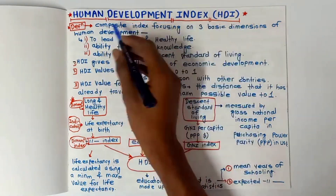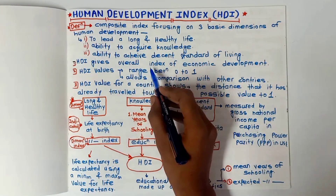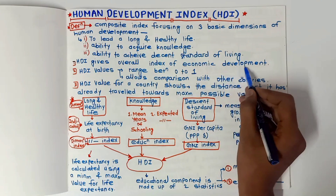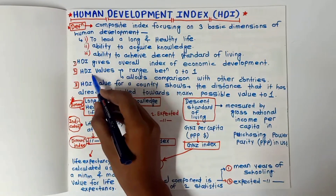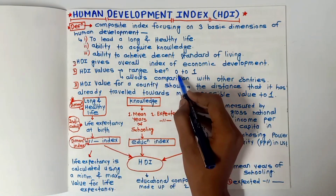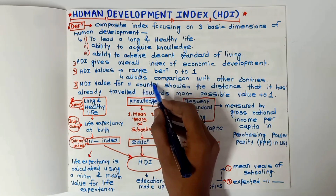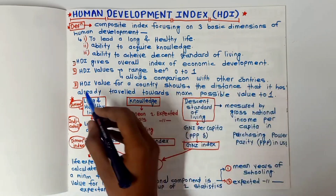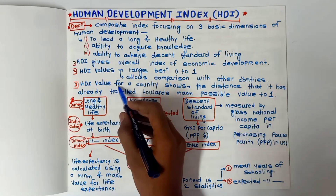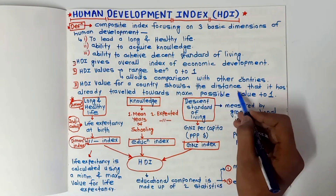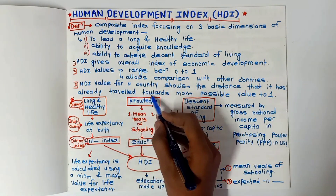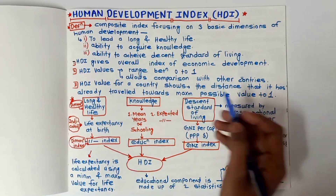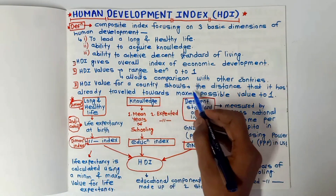HDI stands for Human Development Index. It gives an overall index of economic development — this is important. HDI values range between zero to one, and it allows comparison with other countries. The HDI value for a country shows the distance that it has already traveled towards the maximum possible value of one.